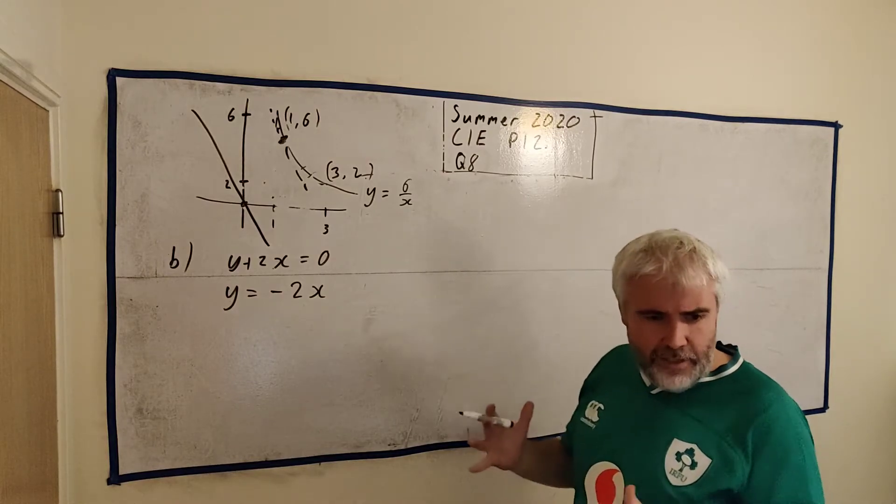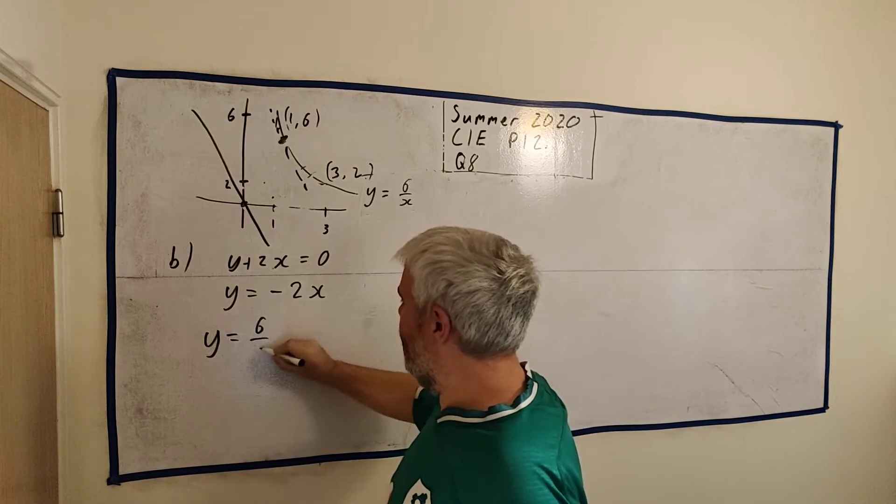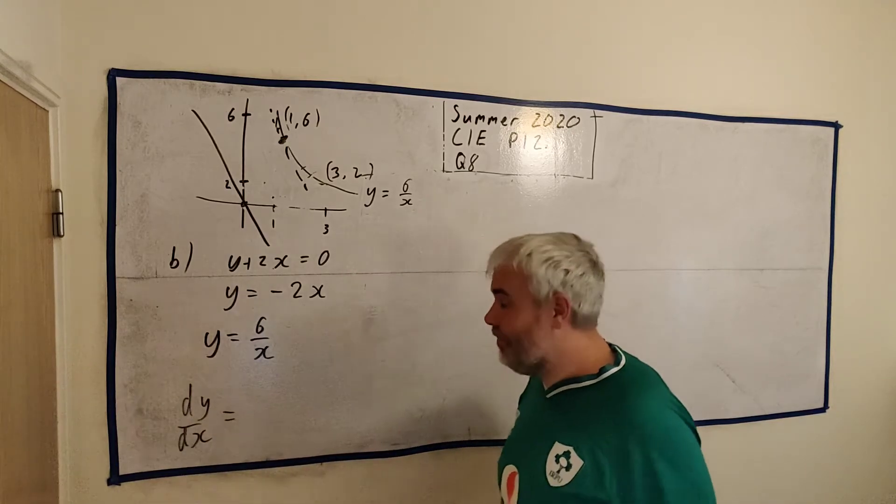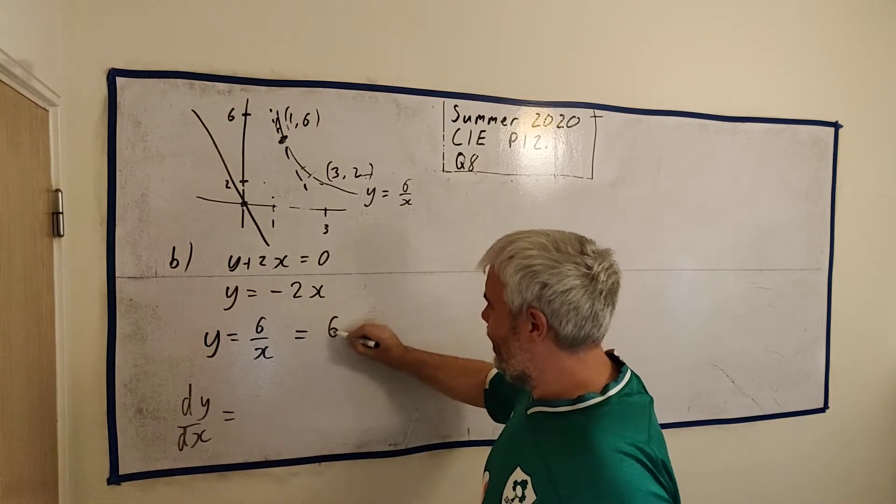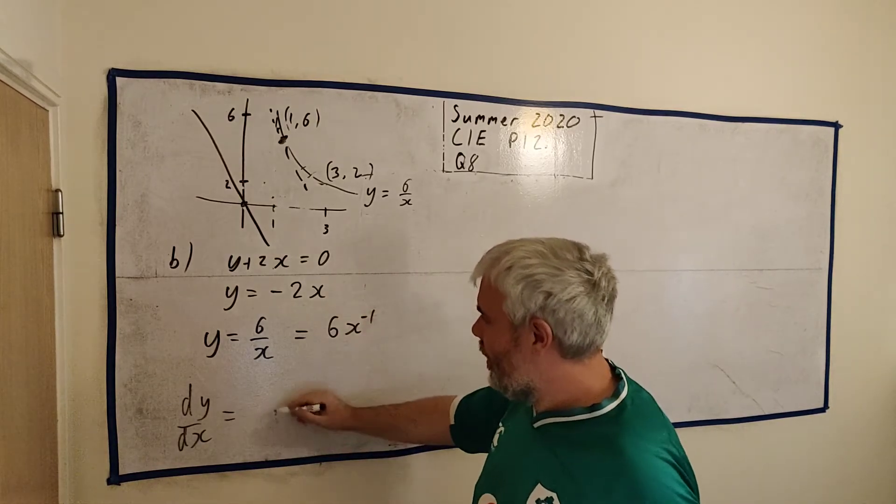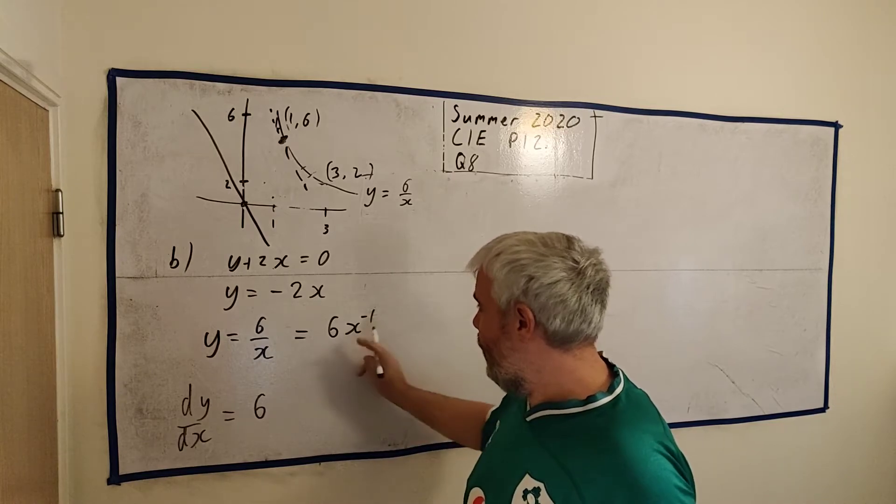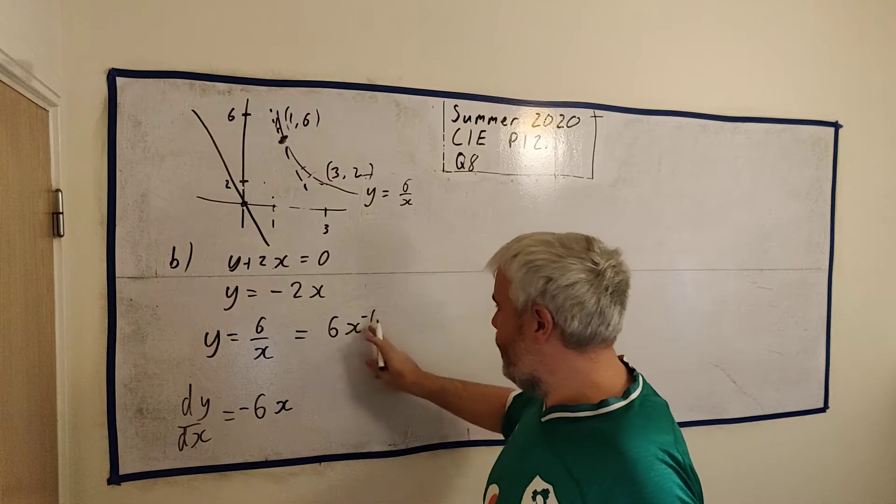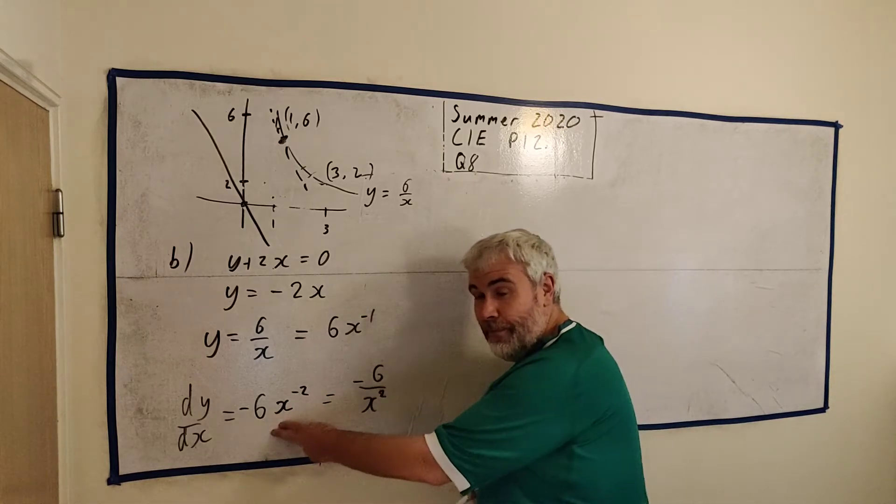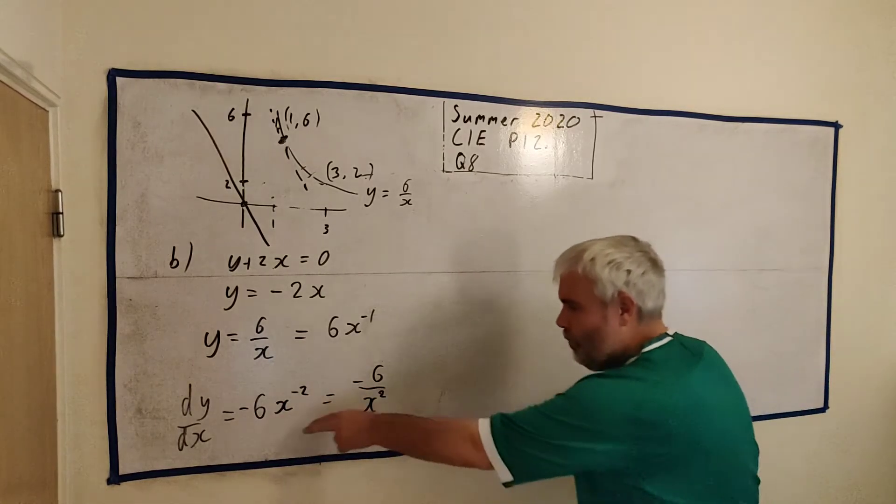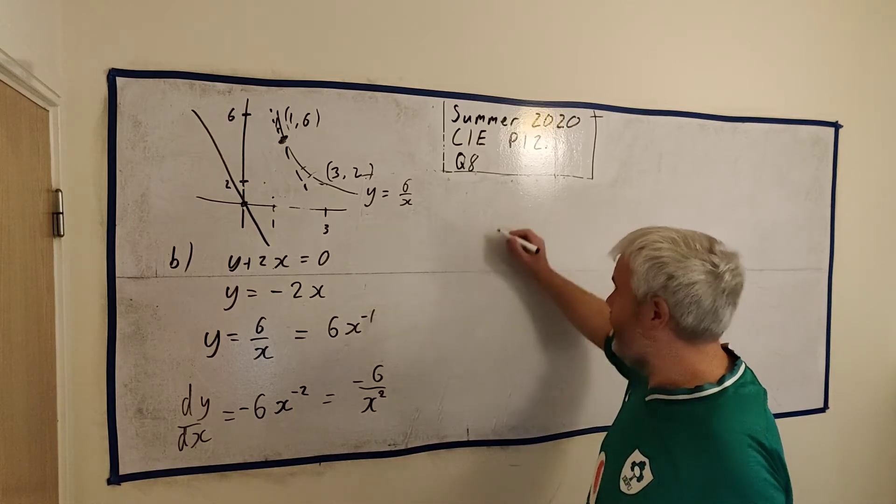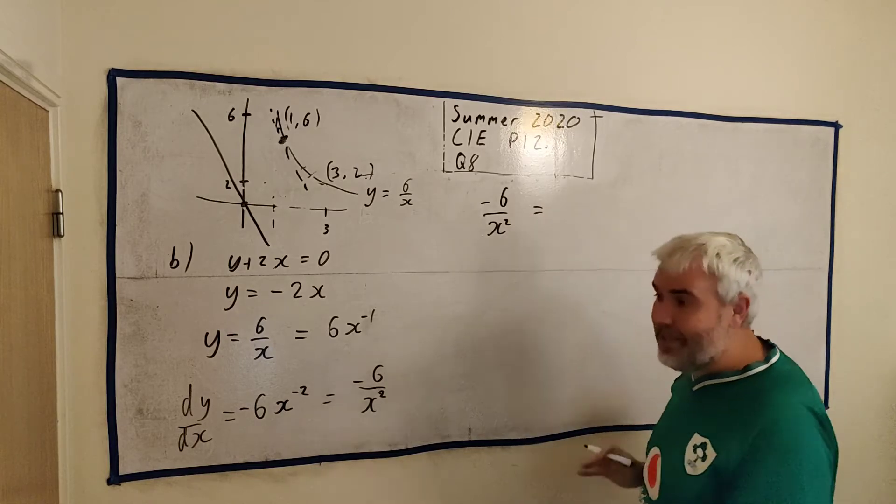They're asking us about the slope of a curve, y equals six over x. So the first thing I want to know is what's dy/dx. That's how I'm going to find the slope of a curve differentiated. Easier than writing this would be 6x to the minus one. Same trick we used in part A. It's easier to differentiate. The derivative here is six multiplied by minus one, x, and we take one away. We get minus two. This is the derivative. Minus six over x squared. I know that's equal to something already. It's equal to minus two because they told me it's parallel to this line.